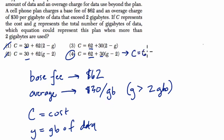Well, cost would be $62 plus 30 times 3 gigabytes, but we don't get charged $30 for each of the 3 gigabytes. It's for each gigabyte over 2. So we do 3, which is our G value in this case, minus 2.